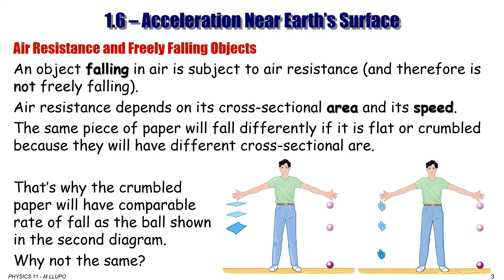A flat piece of paper, when it moves through air, has to displace a lot more air molecules compared to a crumbled piece of paper. So if you do an experiment with a flat piece of paper and a ball, the flat piece of paper falls very slowly compared to the ball. But if you crumble that paper and make its cross-sectional area comparable to the ball, you will see that the rate of falling becomes comparable to the ball.